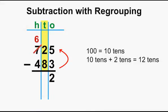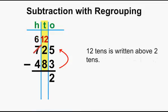100 is equal to 10 tens. We already have 2 tens. So 10 tens plus 2 tens is 12 tens. And 12 tens is written above 2 tens.